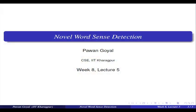Welcome to the final lecture of week eight. This week we talked about lexical semantics and saw how we can use connections between words to find out semantics. The last two lectures covered the classical problem of word sense disambiguation — how, if a word has multiple senses, we find out which particular sense is being used in a given context.